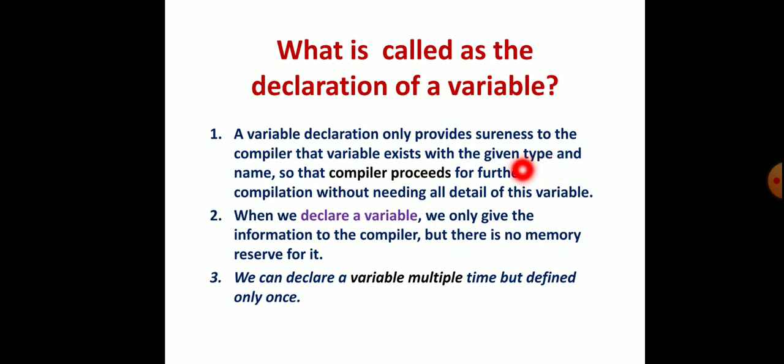First you have to tell the compiler that this is a variable that exists with the given type, like integer or character or float, whatever it is. The compiler proceeds for further compilation without needing all details of this variable. Of course, this is basic stuff that is really interesting to recall.